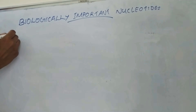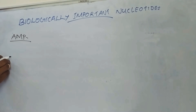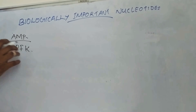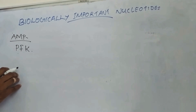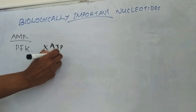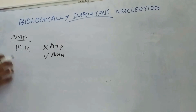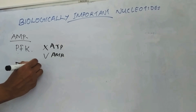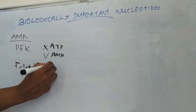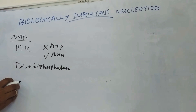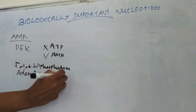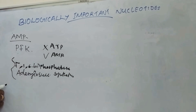Next one is AMP, that is adenosine monophosphate. AMP acts as an activator of certain enzymes, for example phosphofructokinase in the glycolytic pathway — this enzyme is inhibited by ATP and activated by AMP. AMP also acts as an inhibitor of certain enzymes like fructose-1,6-bisphosphatase and adenylosuccinate synthetase.